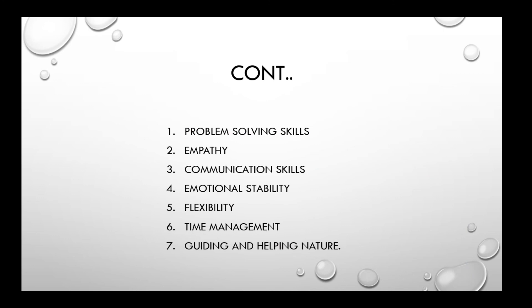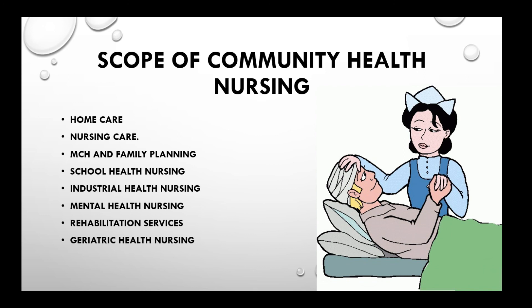The next topic is the scope of community health nursing — the areas where a nurse can practice. The areas included in community health nursing are home care nursing, maternal and child health and family planning, school health nursing, industrial health nursing, mental health services, and geriatric health nursing.